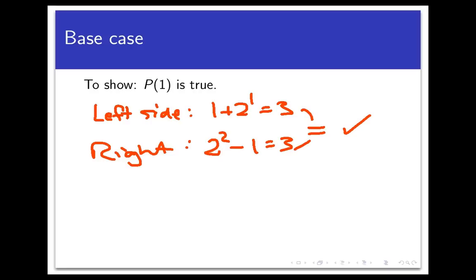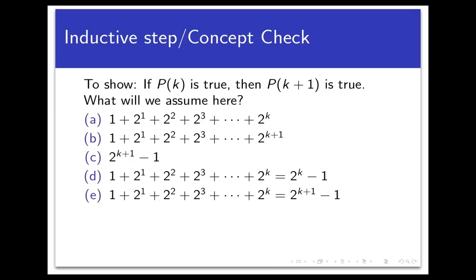We actually did this work earlier when we were just playing around with the problem. So now it's on to the inductive step. Remember, here we're going to prove that if p of k is true for some positive integer k, then p of k plus 1 is true. This is an if-then statement, so we need to assume something and then prove something. For a concept check — what are we going to assume in the inductive step? Pause the video and select the one you think is right.